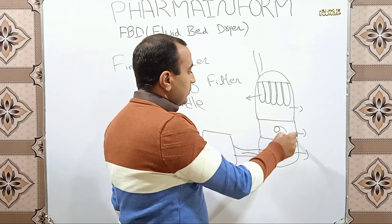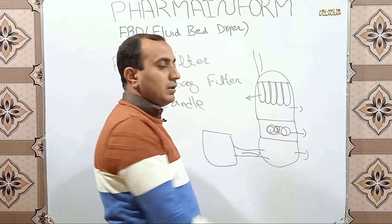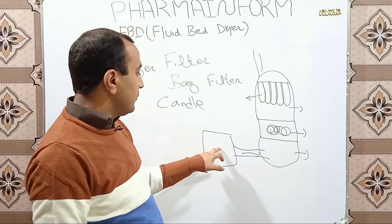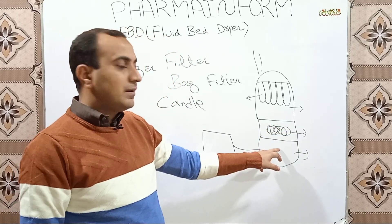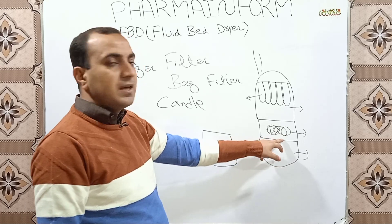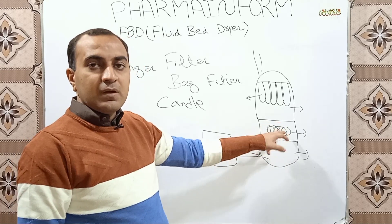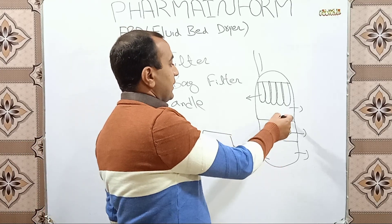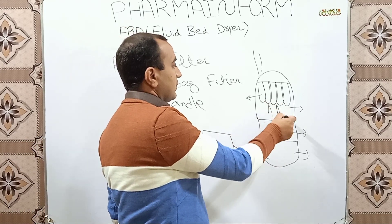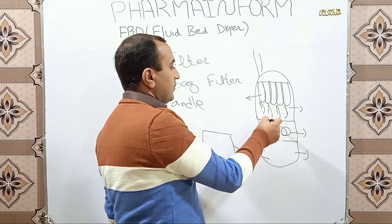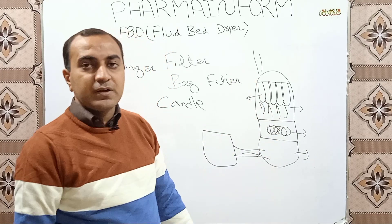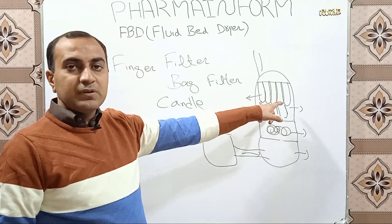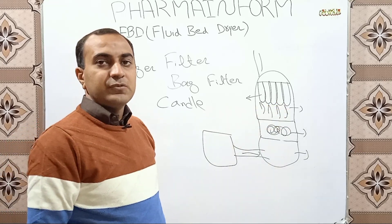We have a product or granules in our product trolley. When air after processing comes into the plenum and passes through the dutch oven screen and comes into the product trolley, this results in fluidization of our product. This product goes upward and downward into the drying chamber. This process is known as fluidization.